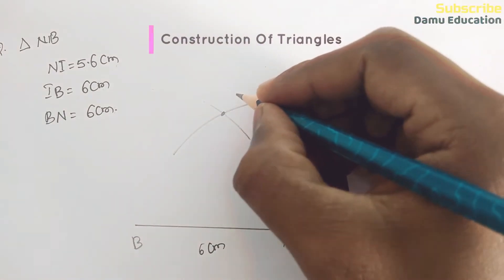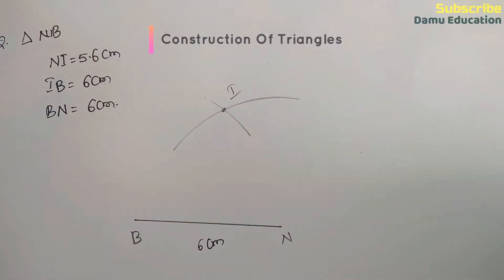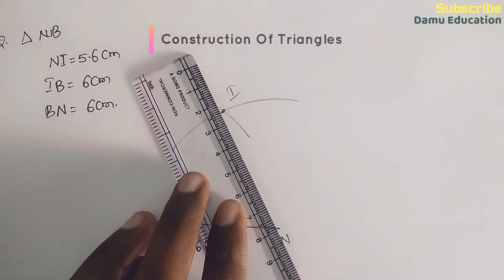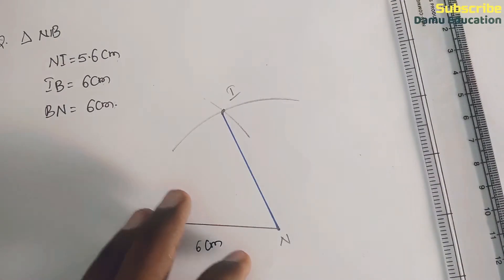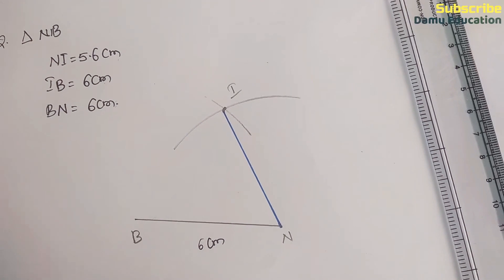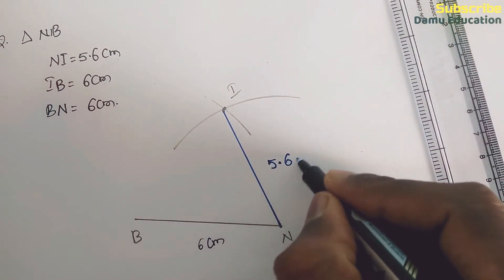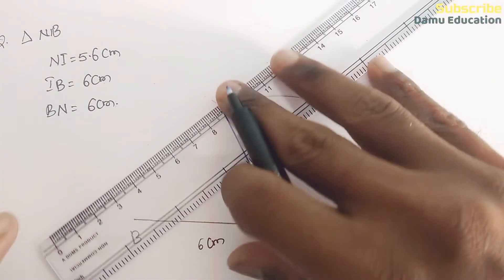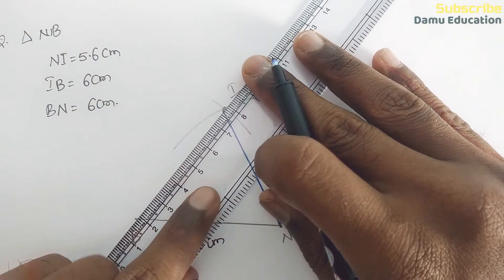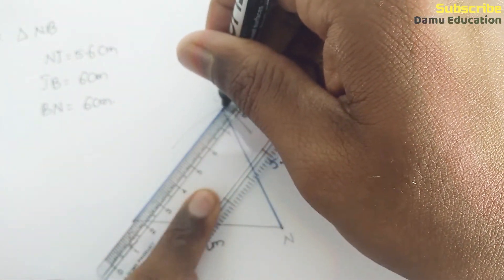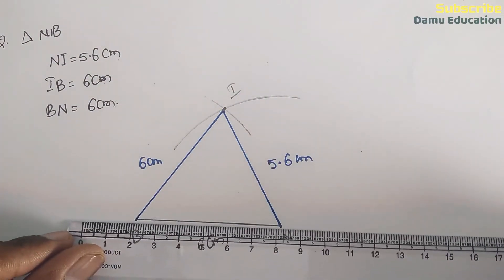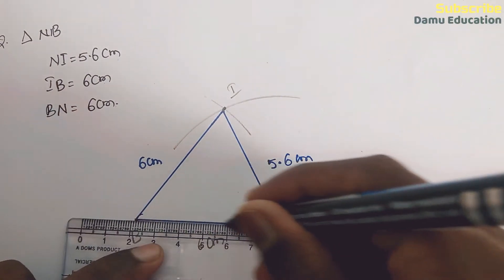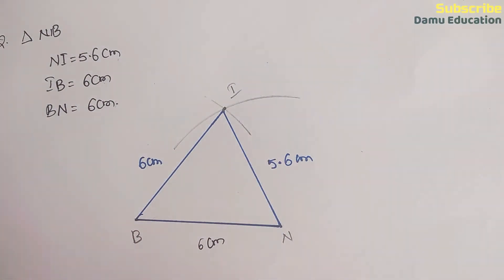If you join all that, join I and N — IN will be 5.6 centimeters. And join IB — IB is 6 centimeters. Then make point B also, and we got the required triangle.